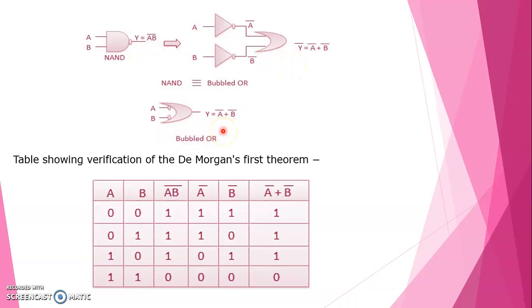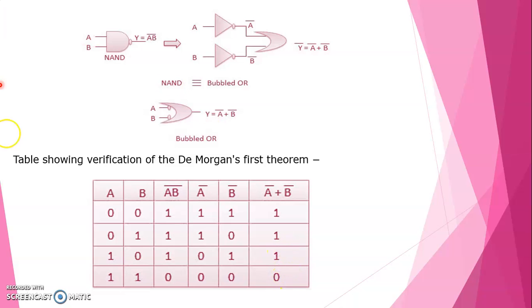For De Morgan's first theorem, the truth table values for AB are 00, 01, 10, 11. AB bar gives 1,1,1,0. A bar and B bar individually give their complements. A bar plus B bar also gives 1,1,1,0 — proving the first theorem. The circuit diagram shows the NAND gate on one side and the bubble OR gate on the other.